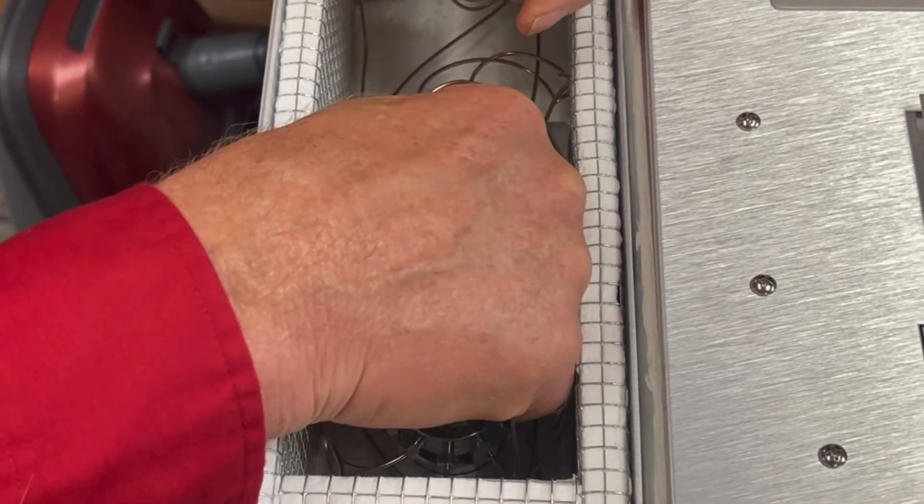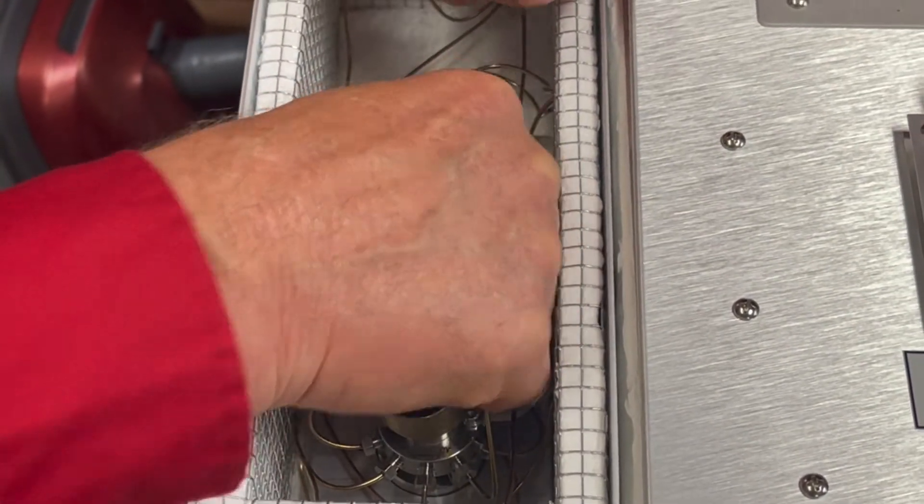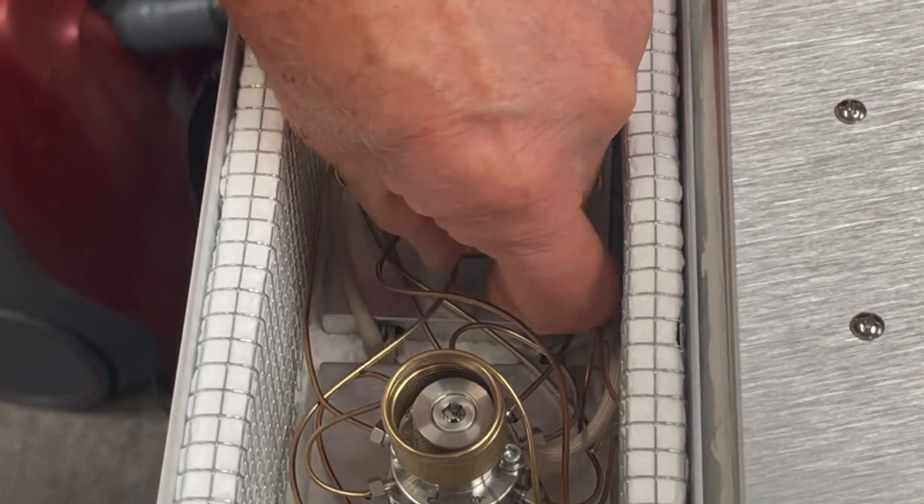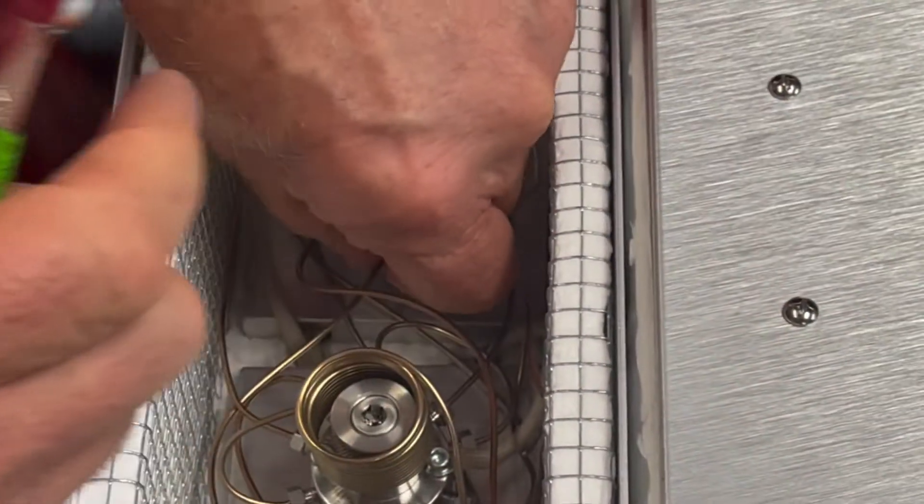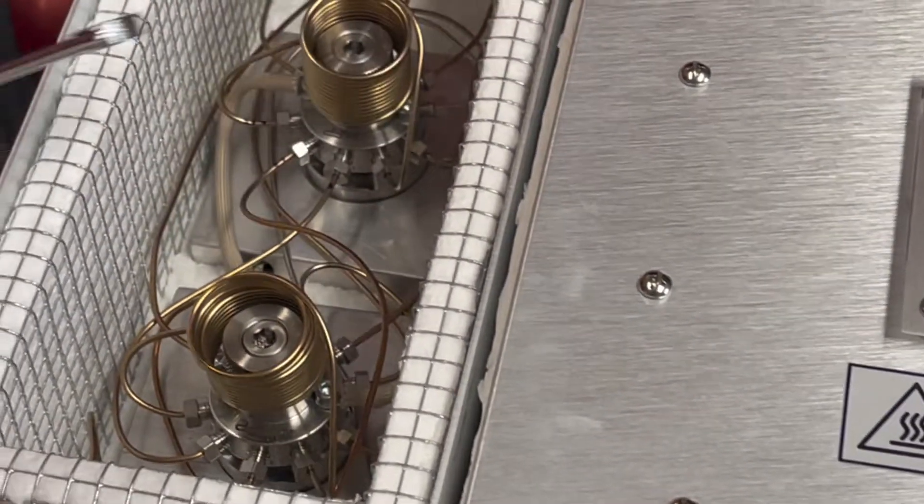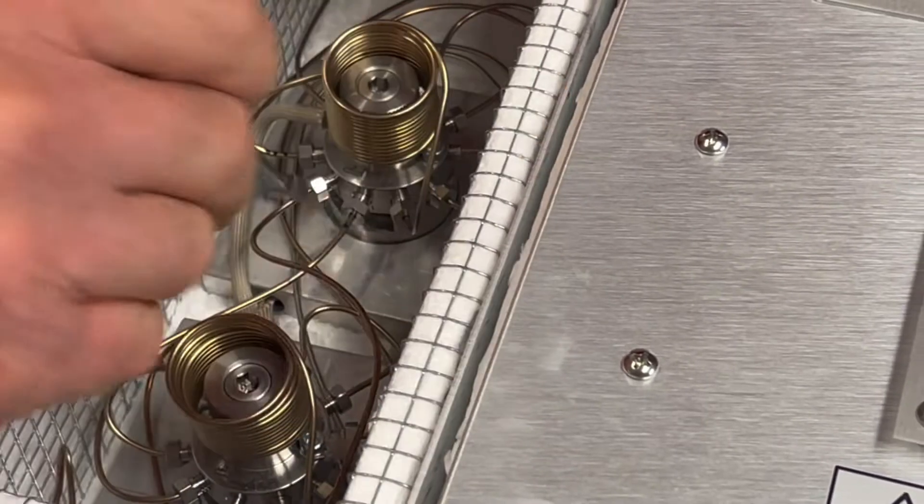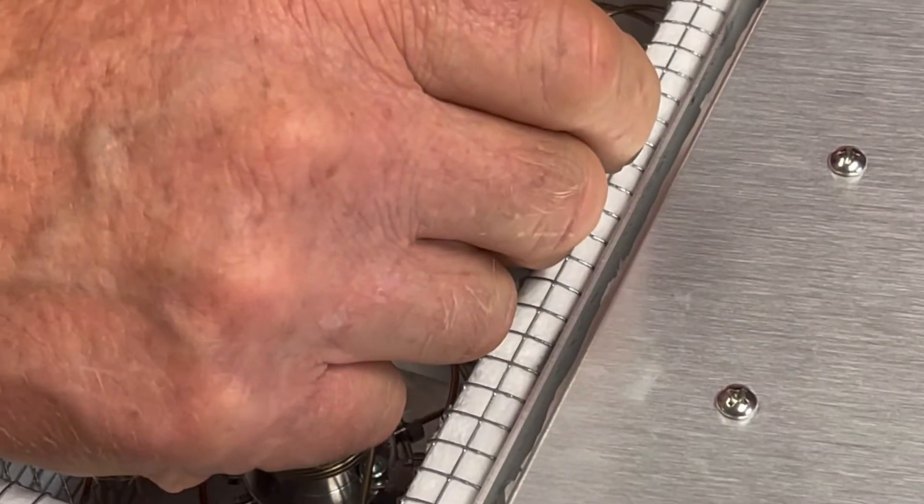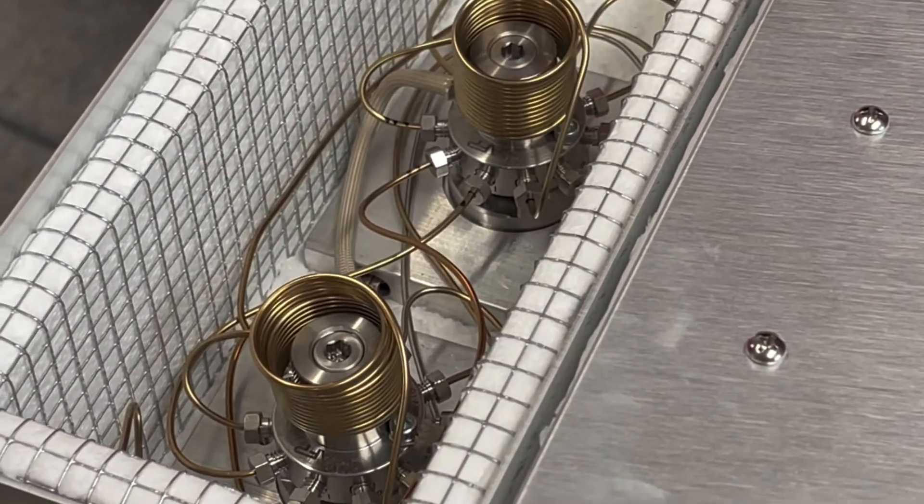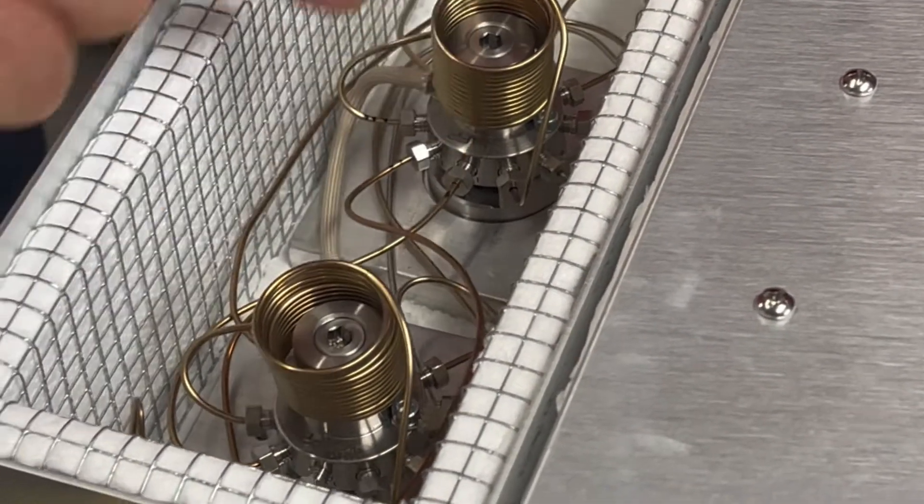And then when you later put it back in, you have to be careful that you feel that you've found the thread because you don't want to cross-thread this. It should go in easy. If it doesn't go in easy, you have to be real careful not to cross-thread. But then when you tighten it up, you feel for a little bit of a squish. That's necessary to make sure the ferrule is really tight in there.